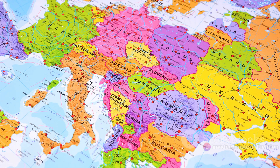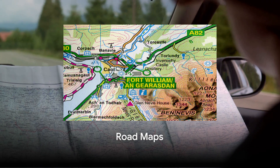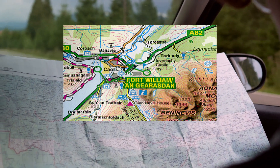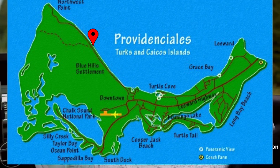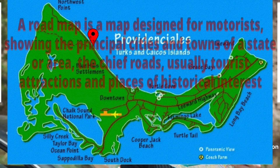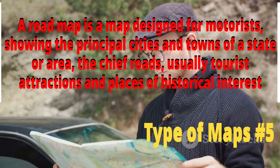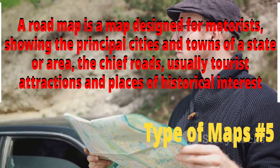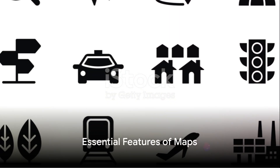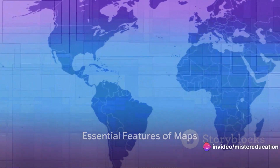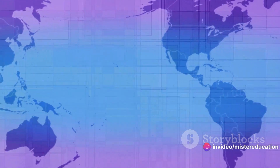Lastly, road maps — the paper problem solver in our glove compartments. They guide us from point A to point B, detailing highways, main roads, and sometimes even smaller streets. They're essential for travelers, truck drivers, and anyone else navigating unfamiliar territory. All maps share a basic purpose: they show where things are and present information about the world in a simple visual way.